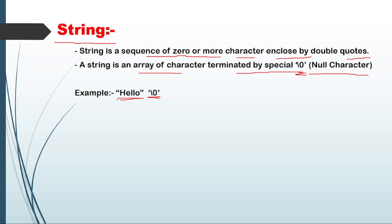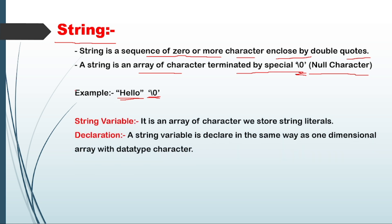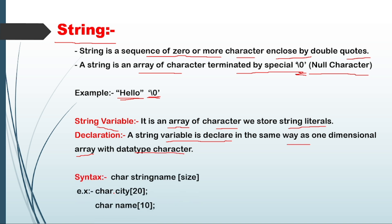What is meant by a string variable? A string variable is an array of characters that we store in a string later. What is meant by declaration? A string variable is declared in the same way as a one-dimensional array with data type character.